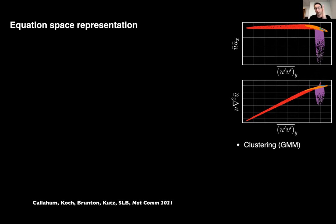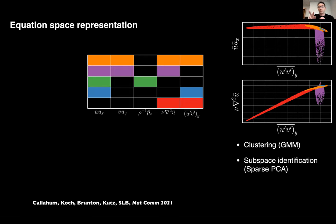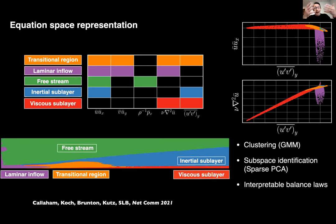Jared applied a Gaussian mixture model to segment the data into clusters in equation space, and then for each cluster applied a sparse subspace identification tool to find a subspace describing most of the variance with as many zero components as possible. Each cluster is described by a subset of the physics: the red cluster needs only two terms, the blue only another two terms, and so on. Re-plotting these regions back in the boundary layer, you can see the boundary layer color-coded by what subset of physics is active — and this recapitulates 100 years of boundary layer theory, completely automated from data. You learn there is a viscous sublayer, an inertial sublayer, a transitional region, purely by looking at what terms are large in what regions of space.